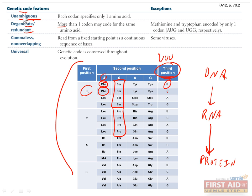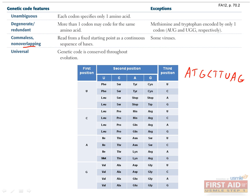Another feature is that the code is unambiguous, which means that each codon only codes for one amino acid. Our third feature is that it is comma-less or non-overlapping. I'll explain this with an example.